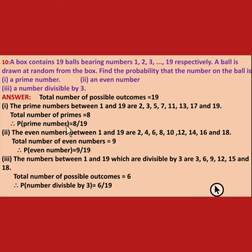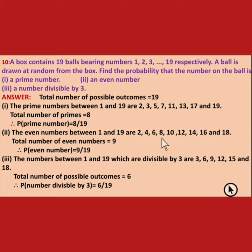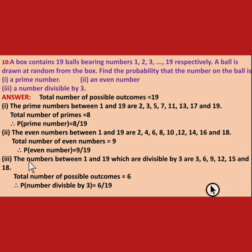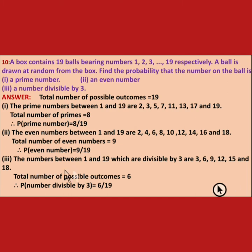Even numbers between 1 and 19 are: 2, 4, 6, 8, 10, 12, 14, 16, and 18 — that is 9 even numbers. Probability of an even number is 9 upon 19. Numbers divisible by 3 between 1 and 19 are: 3, 6, 9, 12, 15, and 18 — that is 6 numbers. Probability of a number divisible by 3 is 6 upon 19.